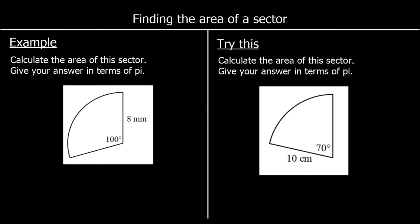This question says calculate the area of this sector. A sector is part of a circle — we've got the center of the circle, two radiuses, and an arc, which is part of the circumference. That's what makes it a sector: two radiuses and part of the circumference.